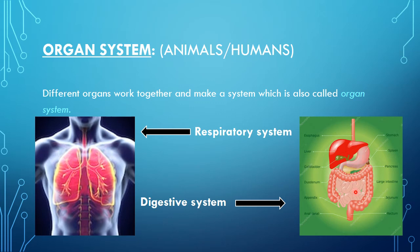After the stomach, food enters into the small intestine. The small intestine has three parts: the first part is the duodenum, the second part is also the jejunum, and the third part which connects the small intestine with the large intestine is called the ileum. Here the process of digestion completes and absorption of food occurs.